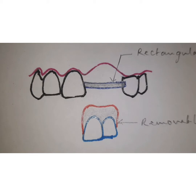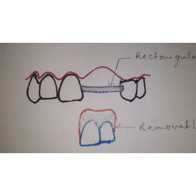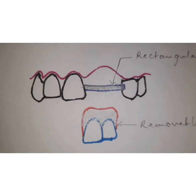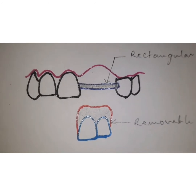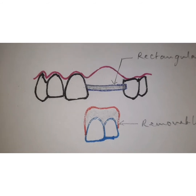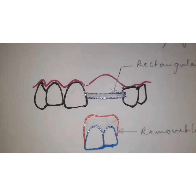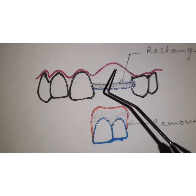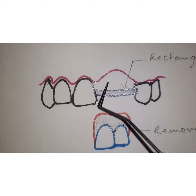The vertical walls of the bar may provide retention for the removable component. Andrew's Bridge, as the name suggests, was first given by James Andrews in 1983. The purpose of this bridge was to restore large ridge defects where there was severe residual ridge resorption of the residual height and width.